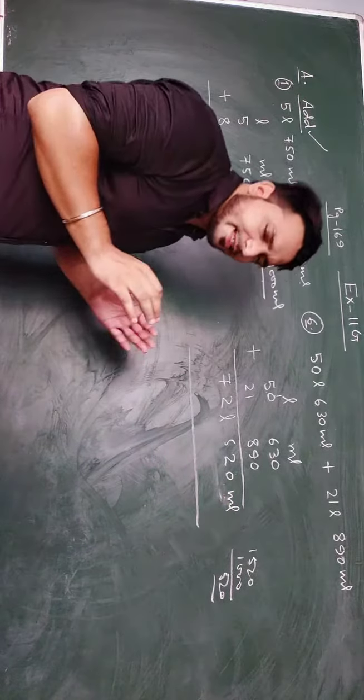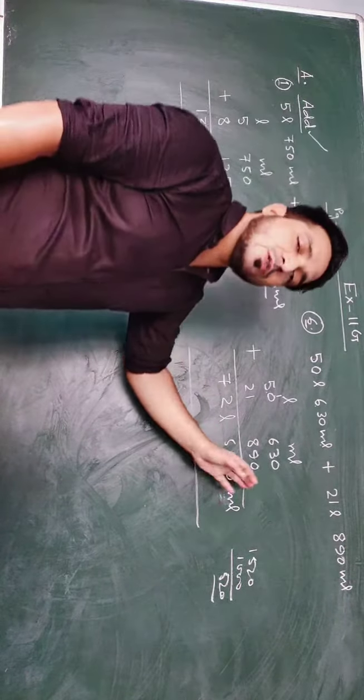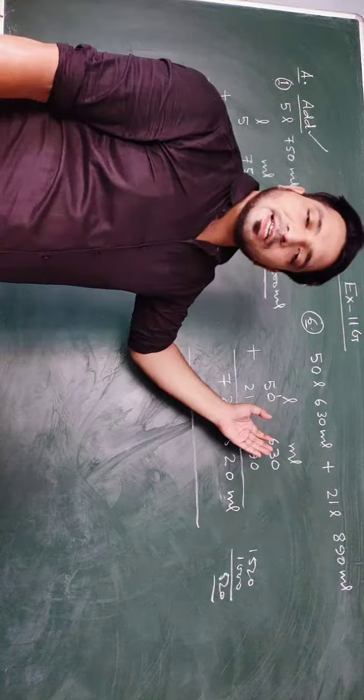So there are two types of sums, simple ones are like this which will be less than 1000, and those which are more than 1000, we have to convert them to litre.